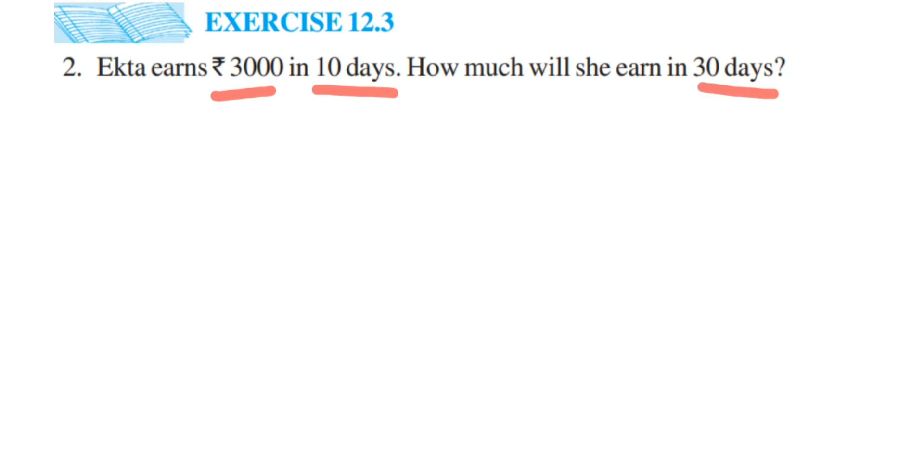How to find out how much she's earning in one day? From the question, they've given that in 10 days she's earning rupees 3000. To find out for one day, we send this 10 to the other side. So one day equals rupees 3000 divided by 10, which will be 300.